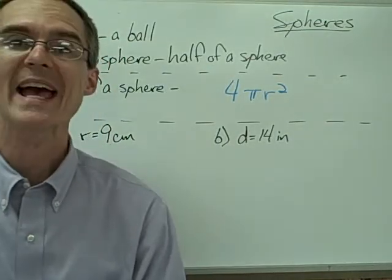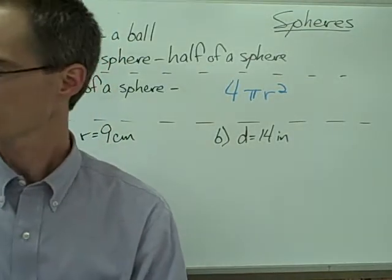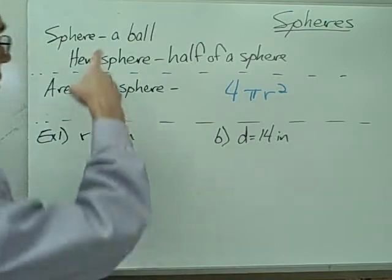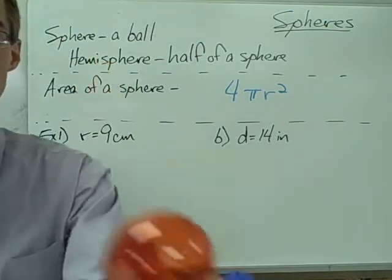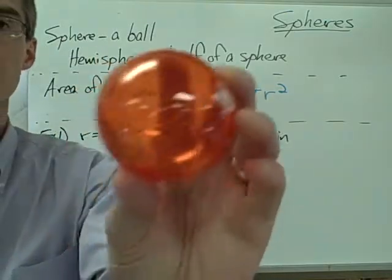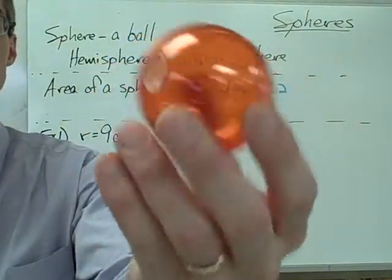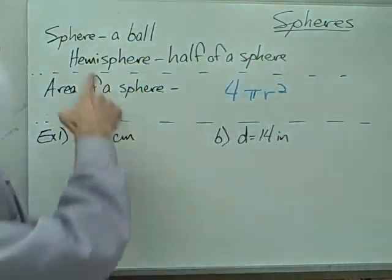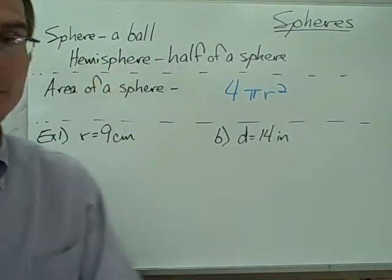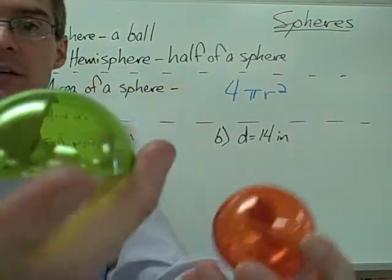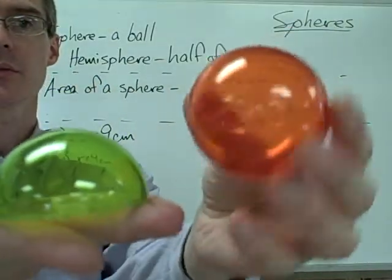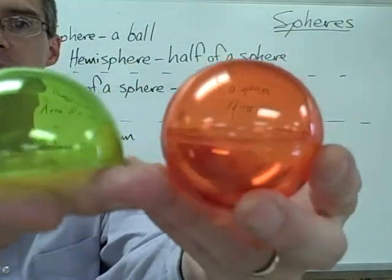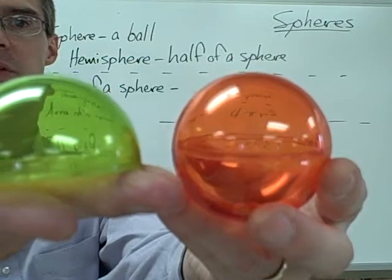In this video we're going to look at spheres — a sphere is just a ball. A hemisphere means half of a sphere. So here's a sphere, and there's half of a sphere.